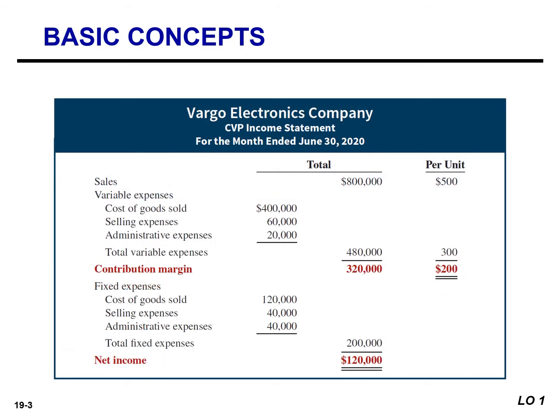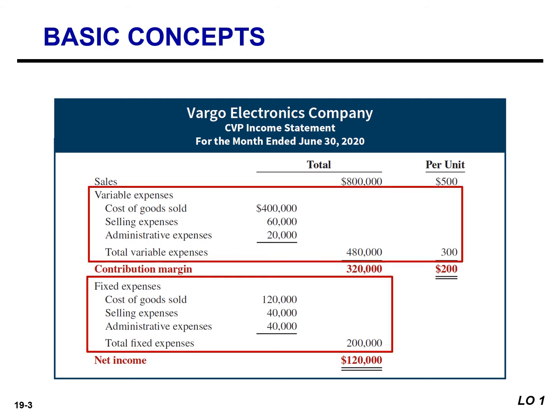Companies often prepare detailed CVP income statements. This income statement provides more detailed information about the composition of expenses. The term 'cost' includes all costs and expenses related to production as well as the sale of the product. So both variable and fixed costs will include manufacturing costs as well as selling and administrative expenses.